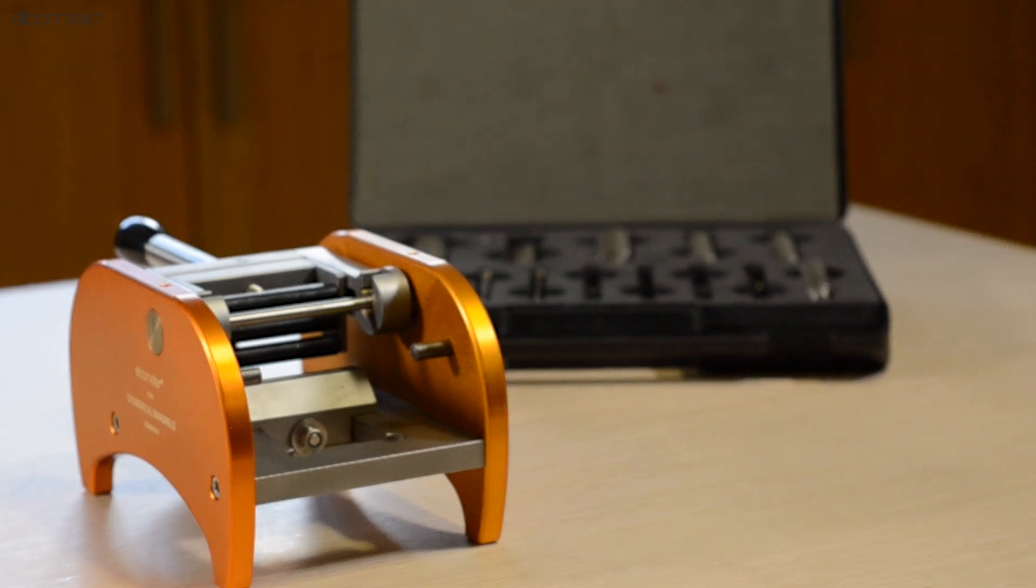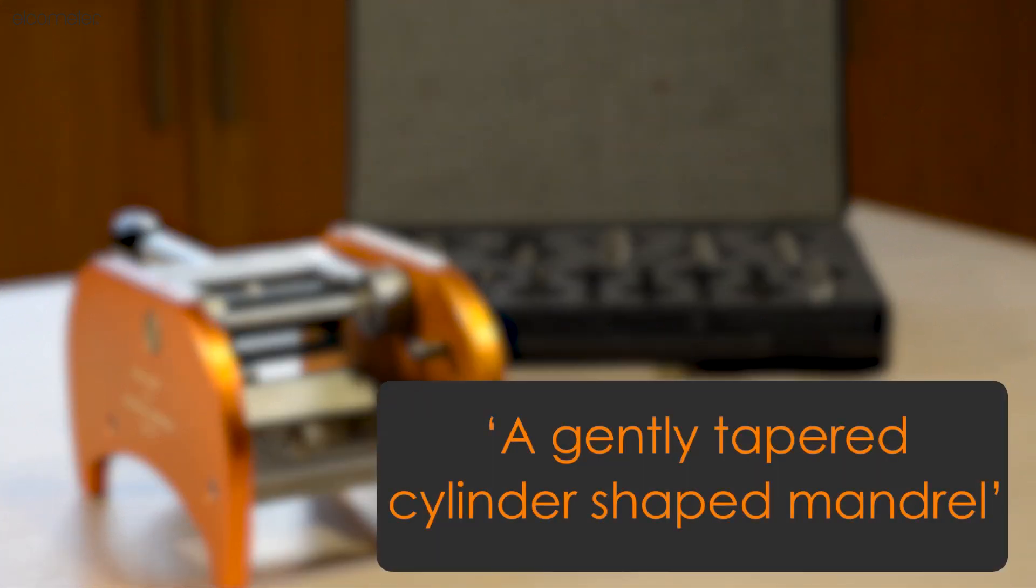A cylindrical mandrel can be defined as a gently tapered cylinder, similar to the conical mandrel but with straight parallel sides. Such mandrels are used with the Elcometer 1506 and 1500 cylindrical mandrel bend testers.